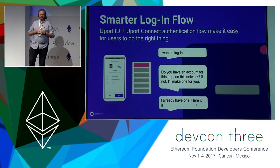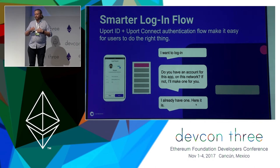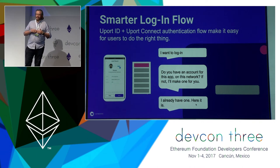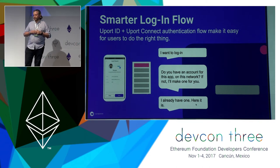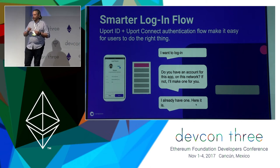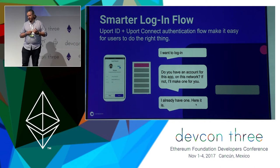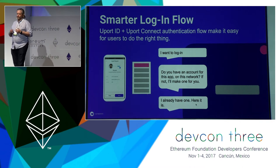The first thing we're doing to solve this is by having a much smarter login flow than our first version. A developer can go in and specify what network they want an account created on. If the user already has an account for your particular dApp on that particular network, that will always be returned. If not, a new account will be created on the fly. This means the user never has to worry about whether your app is on Rinkeby, Kovan, mainnet, or even private networks.